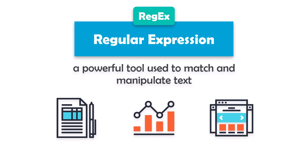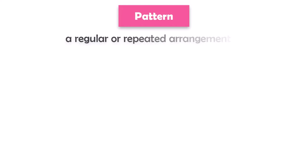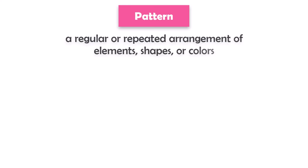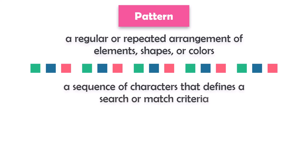Before we dive deep into the world of regular expressions, let's first clarify what the word pattern means. In general, a pattern refers to a regular or repeated arrangement of elements, shapes, or colors — a design or layout that is repeated or follows a certain structure. In the context of regular expressions, a pattern is a sequence of characters that defines a search or match criteria, a string of characters that can be used to find or replace specific text in a larger body of text.